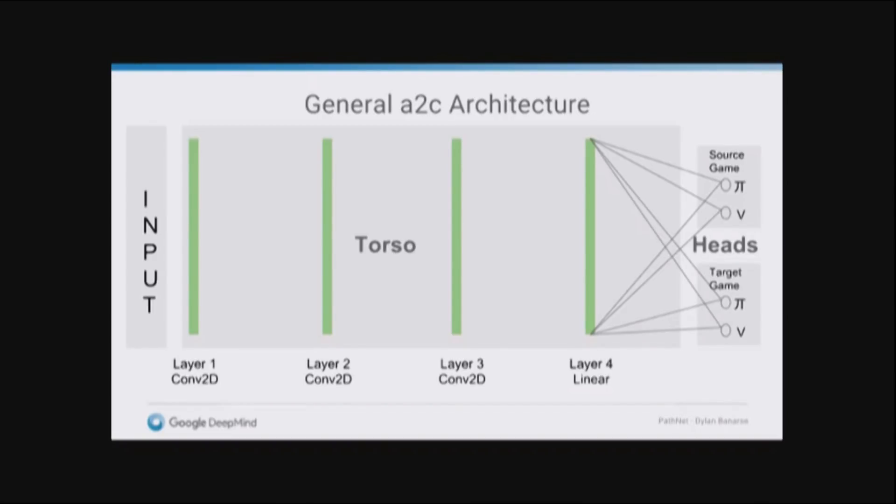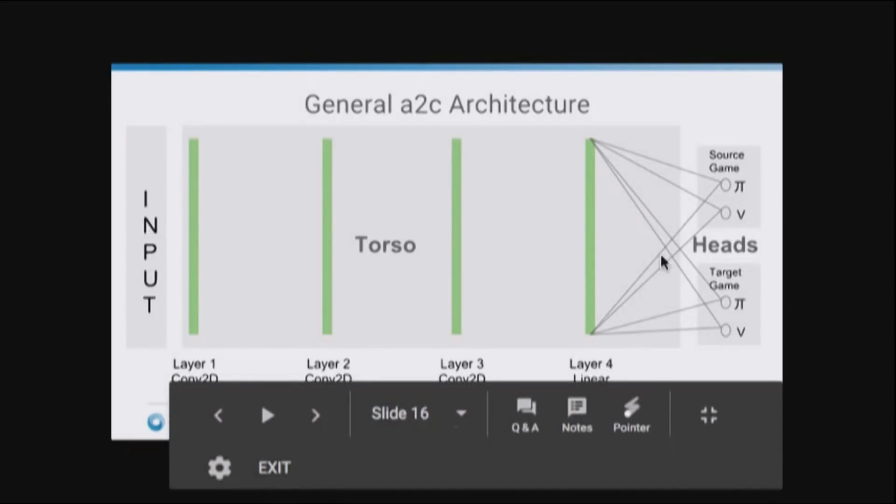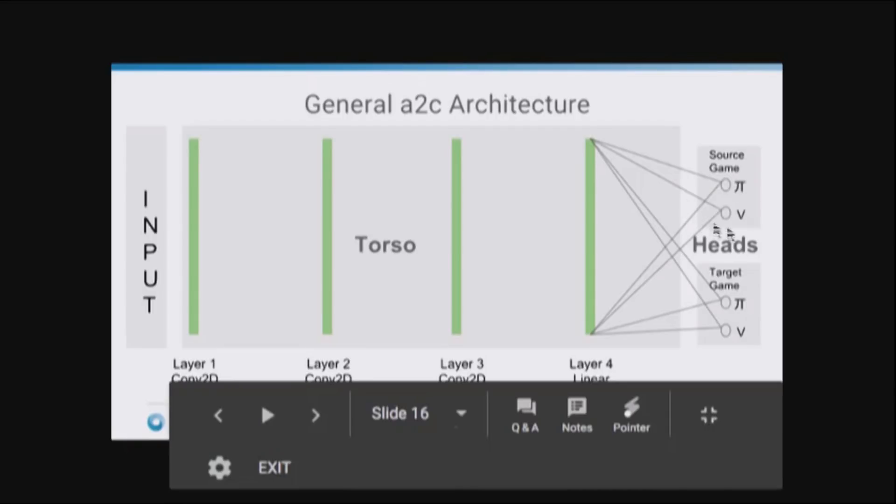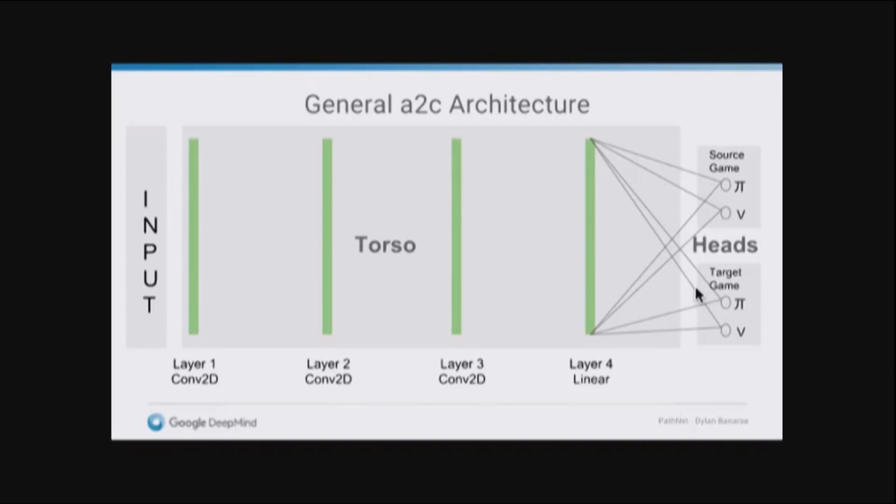We've taken the A2C architecture, so it has three convolutional layers and a linear layer, and two readouts, one representing the policy and one for the value function. Here we've got two sets of those readouts. For the source game, that is the first game, we're going to play in the second game called the target game. I'm interested in a transfer learning setup. I want to learn the second game faster than I could from scratch and faster than I could if I just fine tune the same network on the first game and then retrain that same network on the second game.